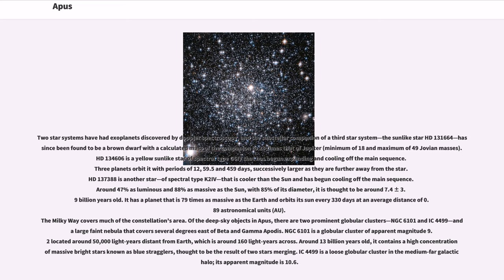The Milky Way covers much of the constellation's area. Of the deep sky objects in Apus, there are two prominent globular clusters, NGC 6101 and IC 4499, and a large faint nebula that covers several degrees east of Beta and Gamma Apodis. NGC 6101 is a globular cluster of apparent magnitude 9.2 located around 50,000 light-years distant from Earth, which is around 160 light-years across. Around 13 billion years old, it contains a high concentration of massive bright stars known as blue stragglers, thought to be the result of two stars merging. IC 4499 is a loose globular cluster in the medium-far galactic halo. Its apparent magnitude is 10.6.